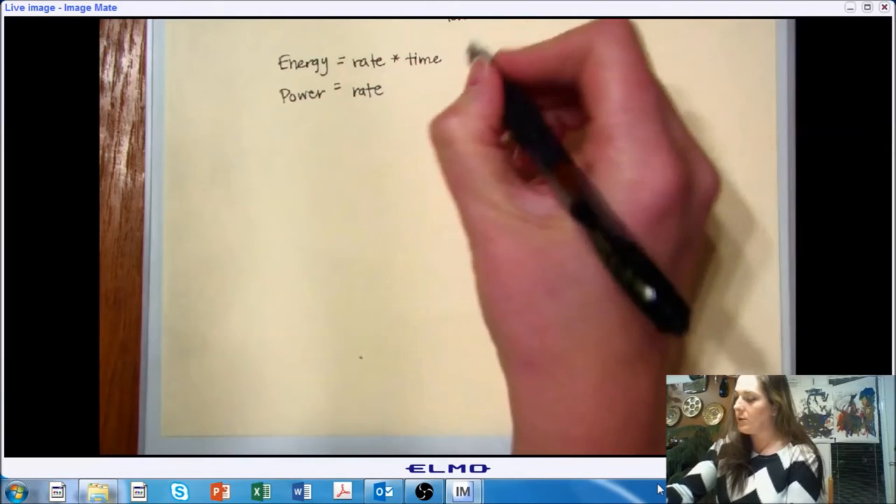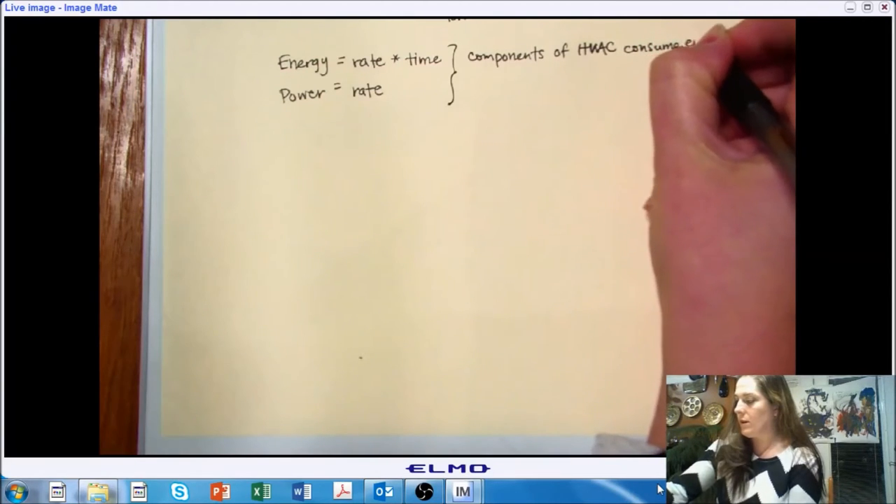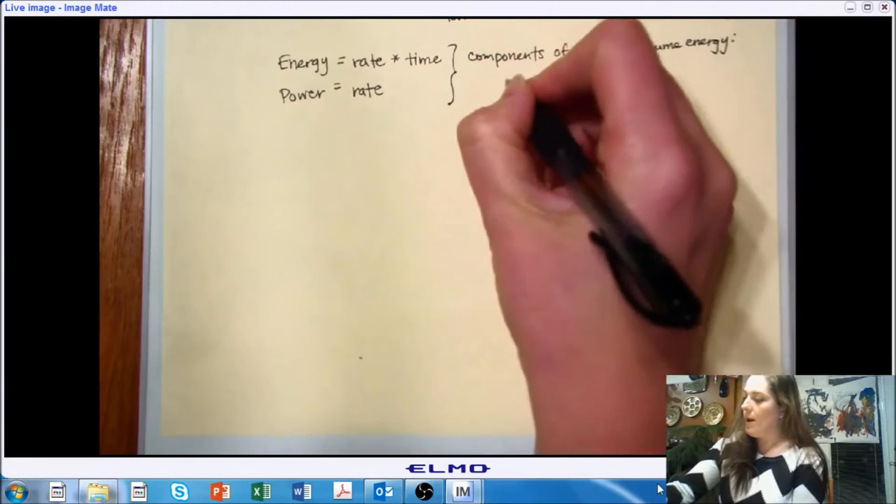Especially when we're thinking about components, we are going to be cognizant in our analysis and in our design that components of HVAC systems are going to consume energy. So we're going to talk a lot about energy in this class. And we have a lot of components within our system that consume energy. So we have fans, in many cases we might have compressors, a compressor or multiples, potentially a boiler, furnace, potentially might have a pump or more than one pump.